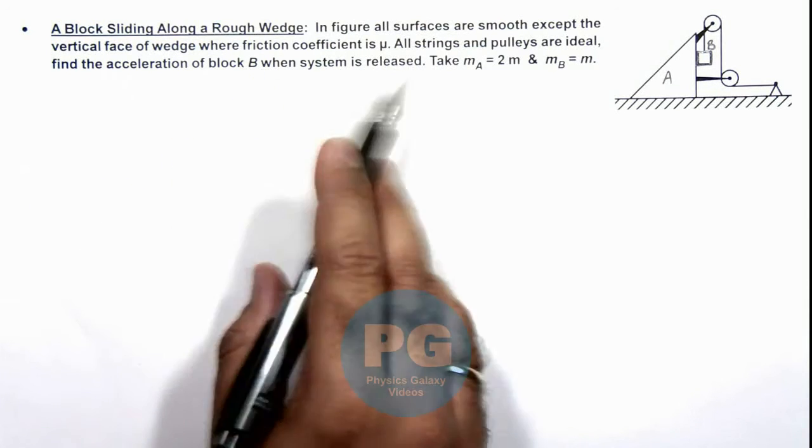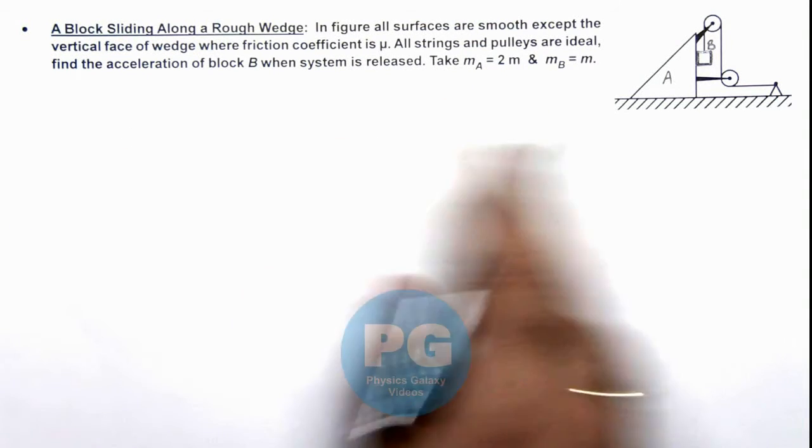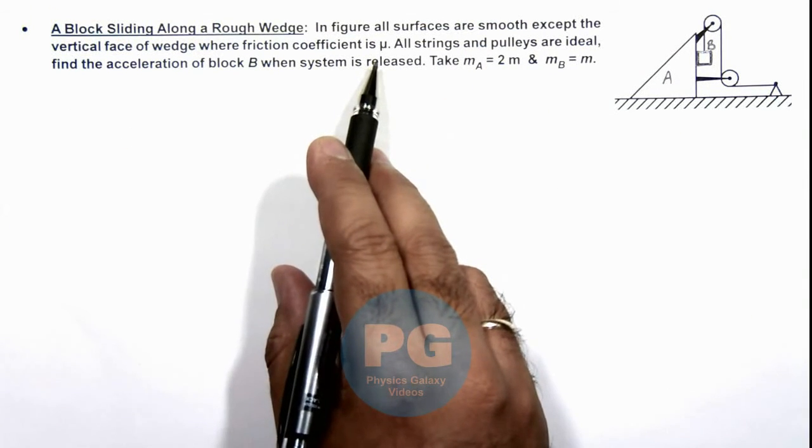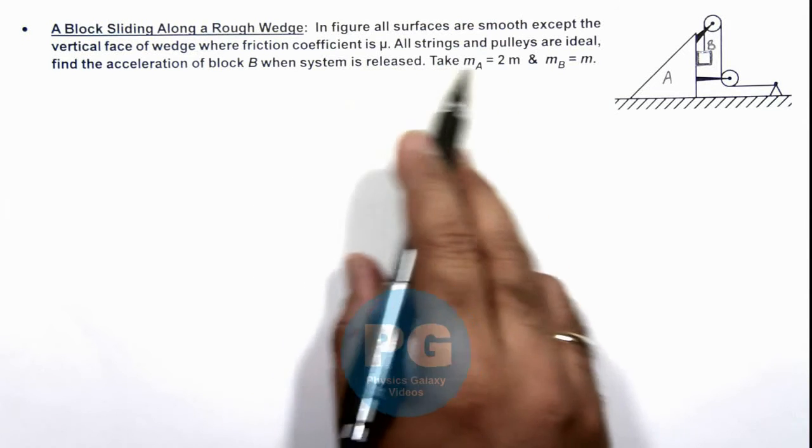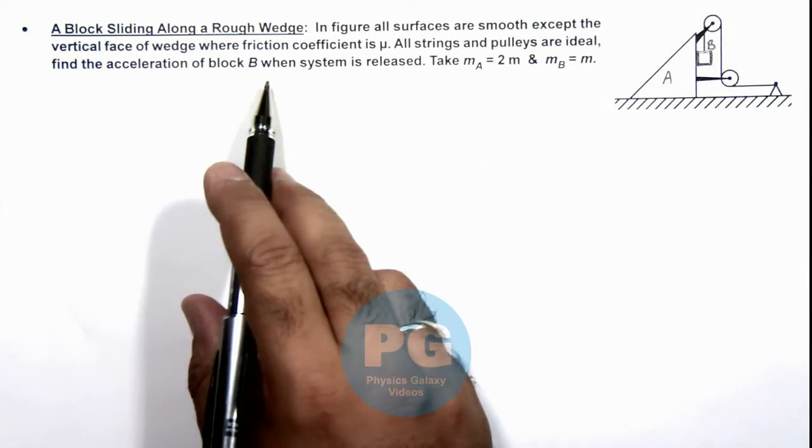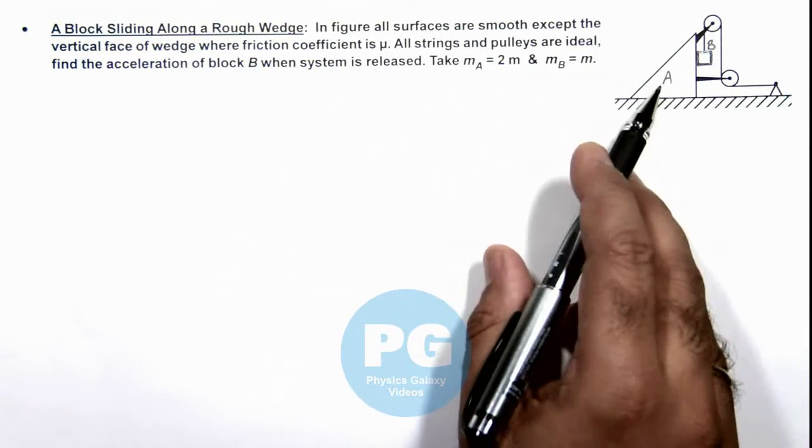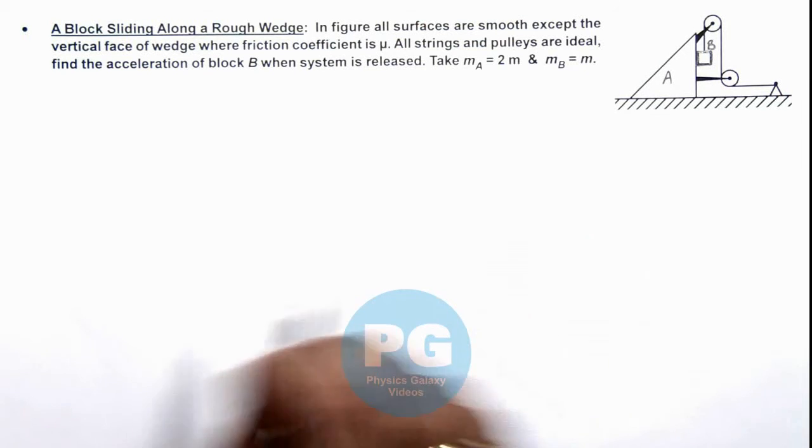Here we are given that in the figure all surfaces are smooth except the vertical face of the wedge where friction coefficient is μ. All strings and pulleys are ideal, and we are required to find the acceleration of block B when the system is released. We are also given that mass of block A is twice that of block B.